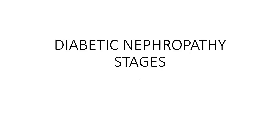Diabetic nephropathy is kidney disease caused by diabetes. Diabetes leads to increased blood sugar levels, which causes glycation of the red blood cells and the renal efferent arterioles and basement membranes. This glycation leads to hyaline arteriosclerosis, resulting in constriction — decreased lumen — of the efferent arterioles.